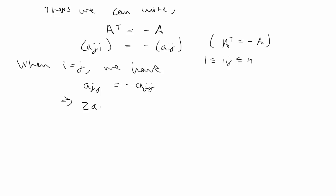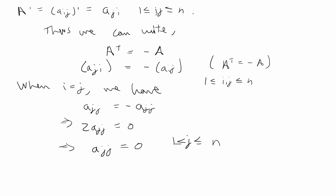So for all values between 1 and n, the diagonal entries, which is aii, will be zero.